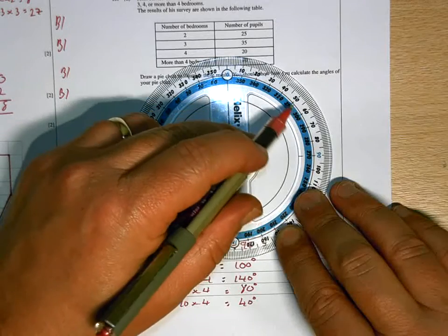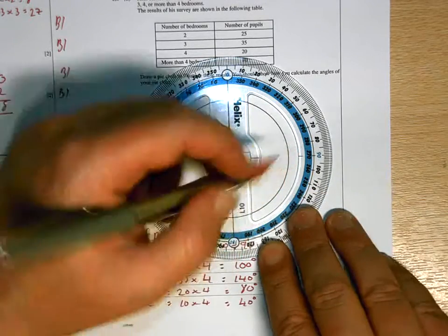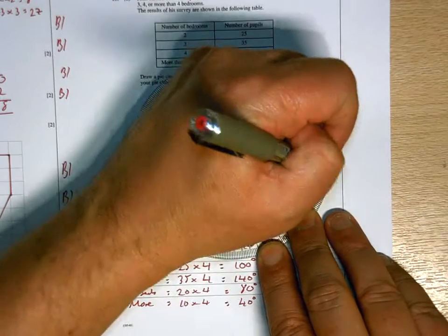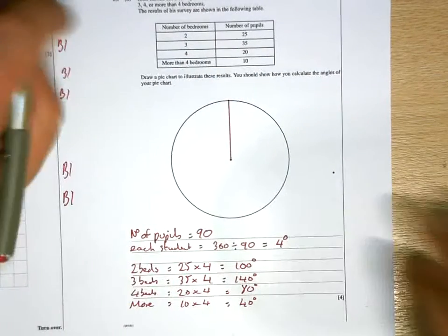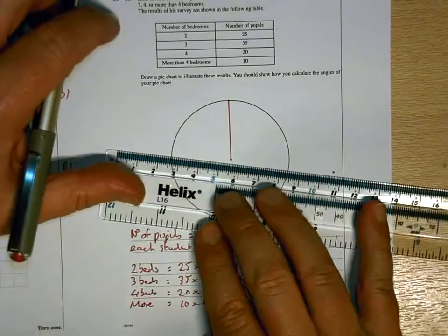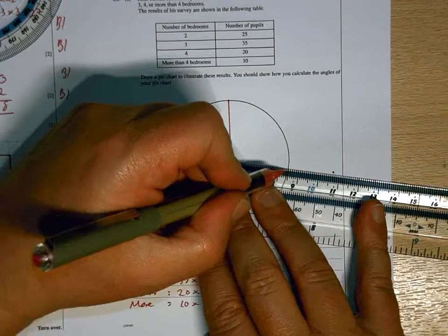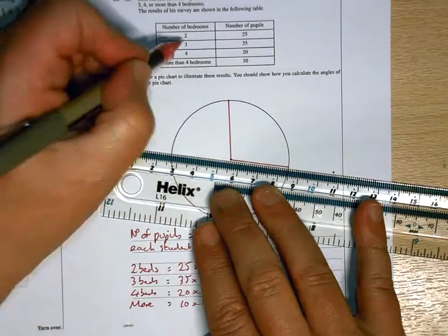So you can see here I've got two numbers. Well that one starts at 350, 340. I need it to start at 0, which is there. And count 10, 20, 30, 40, and so on around. So 100 is there. Make a dot, draw your line. That's two beds.